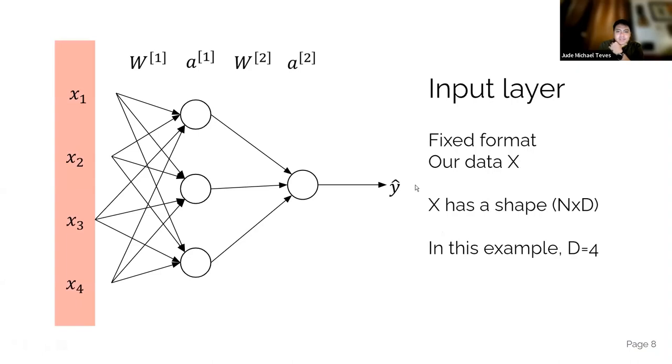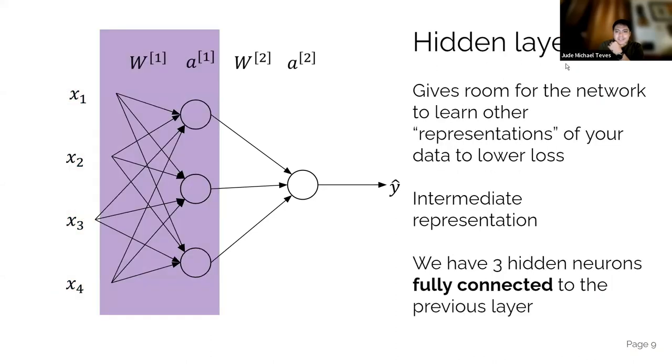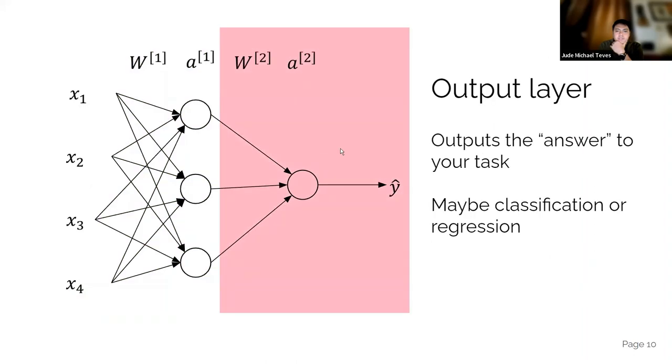So yeah, this is the input layer. Any ML task has this input. Then the hidden layers, they could represent whatever concept you think of. The idea is you're just basically mapping the input to the output. In this case we have three hidden neurons in this fully connected neural network, then you have the output. Output could be a classification or regression.